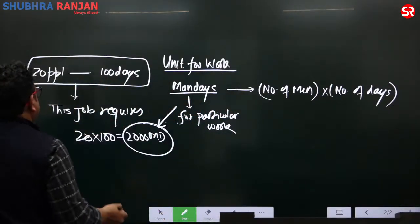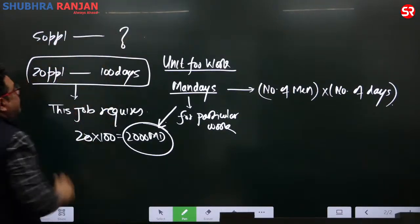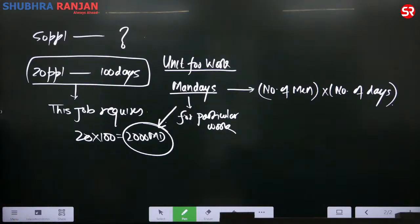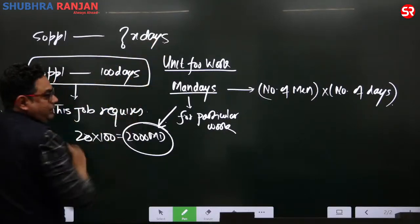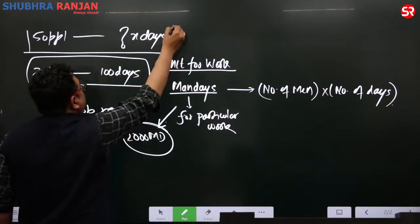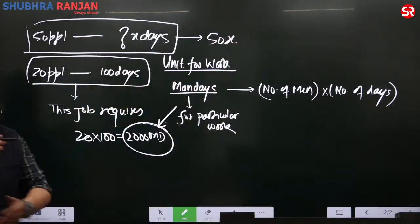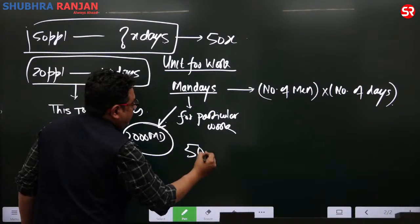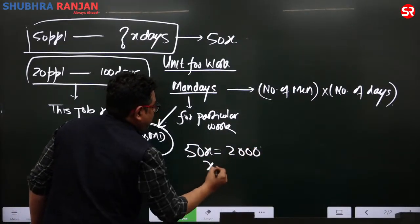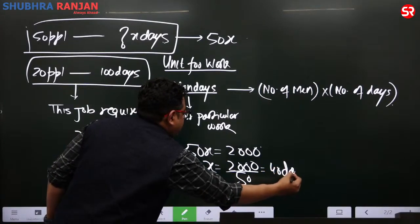If I change the question and say 50 people would finish the same job in how many days? Let it be x days. The unit for work would be 50 times x man days. Since man days is constant: 50 times x equals 2000, which means x equals 2000 upon 50, which is 40 days.